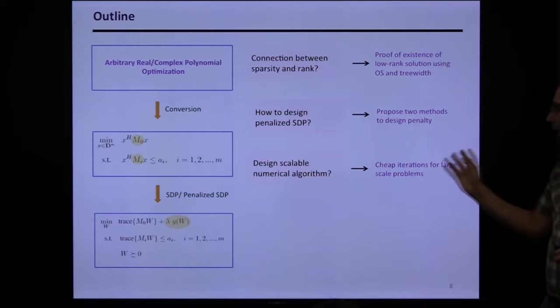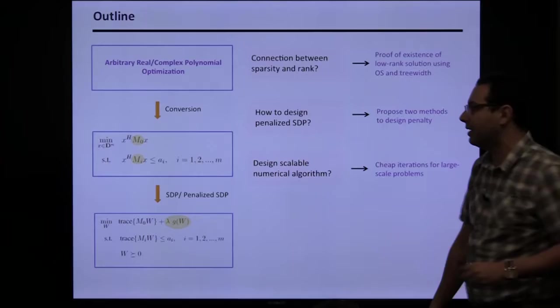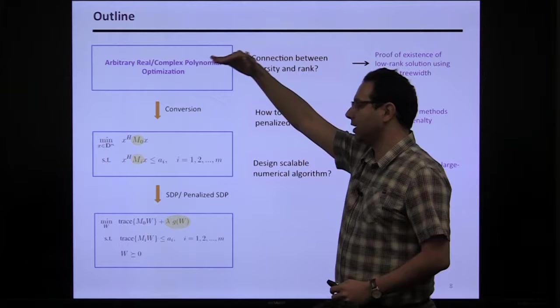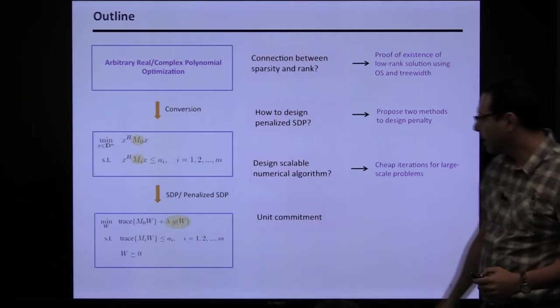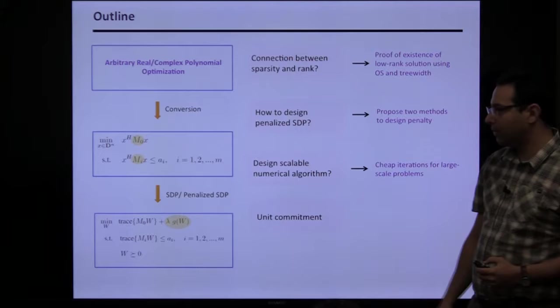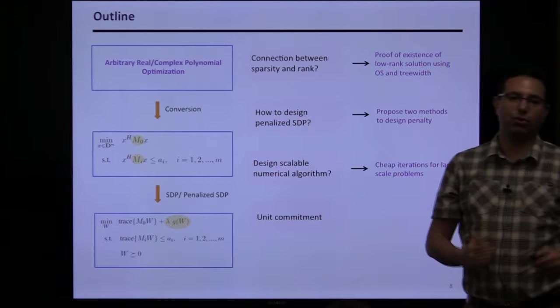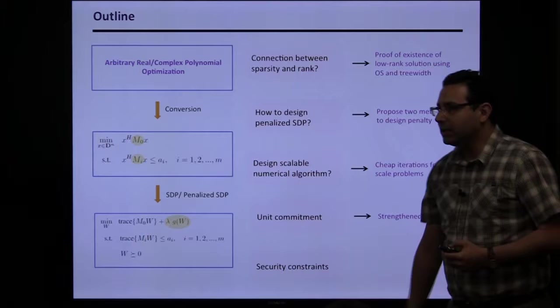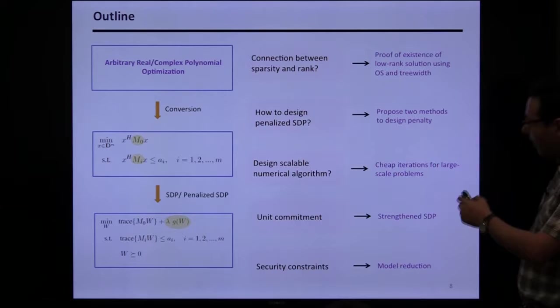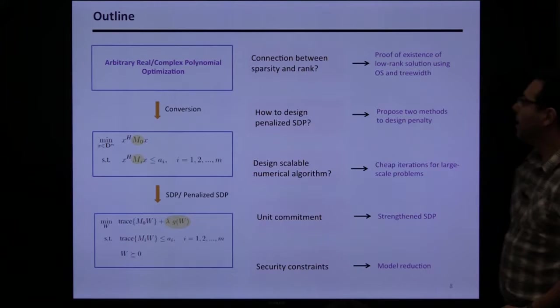We came up with a new numerical algorithm based on ADMM (over-relaxed ADMM) and solved problems with billions of variables on Amazon servers. Starting from polynomial optimization, we go to a new model, use a new numerical algorithm, and then address specific problems like unit commitment — a canonical operations research problem with discrete variables — and distributed control problems.